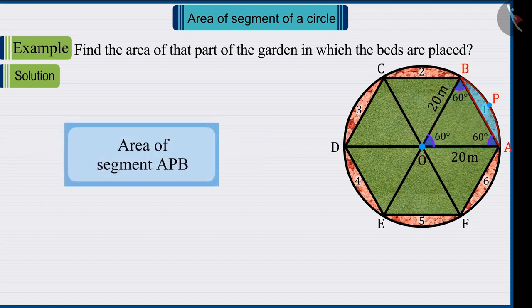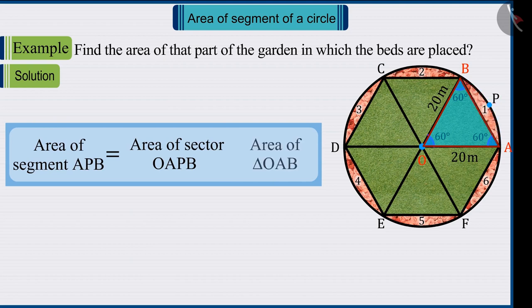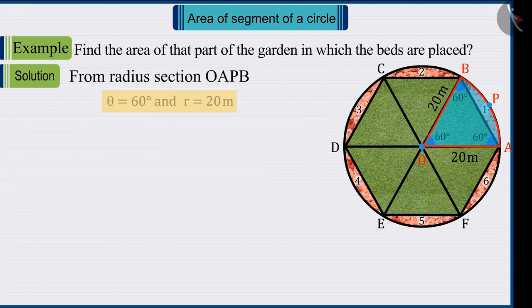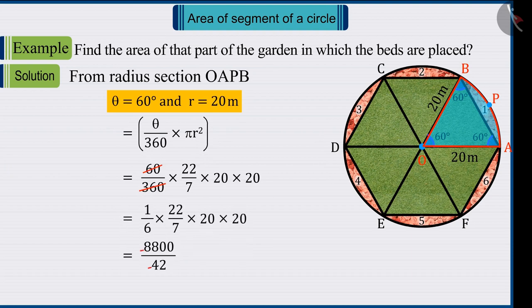Since we have to find the area of the segment, therefore from the area of sector OAPB, the area of equilateral triangle OAB will be subtracted. In the formula of area of the sector when values of theta and radius are placed and solved, the value of sector OAPB is found to be 209.52 square meters.